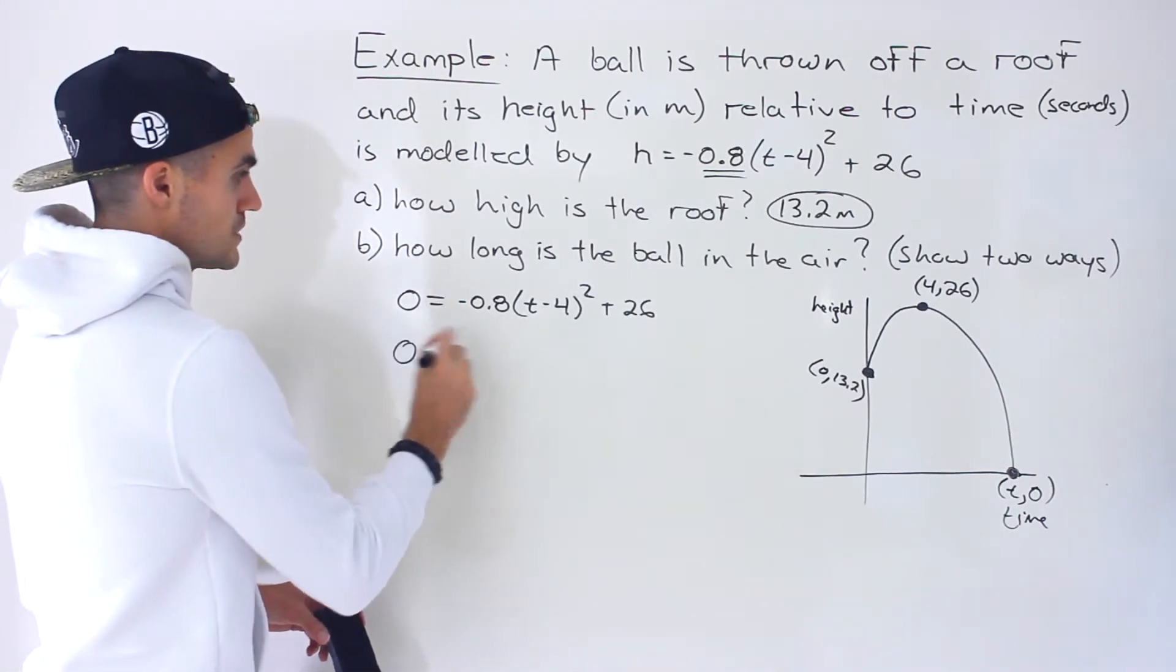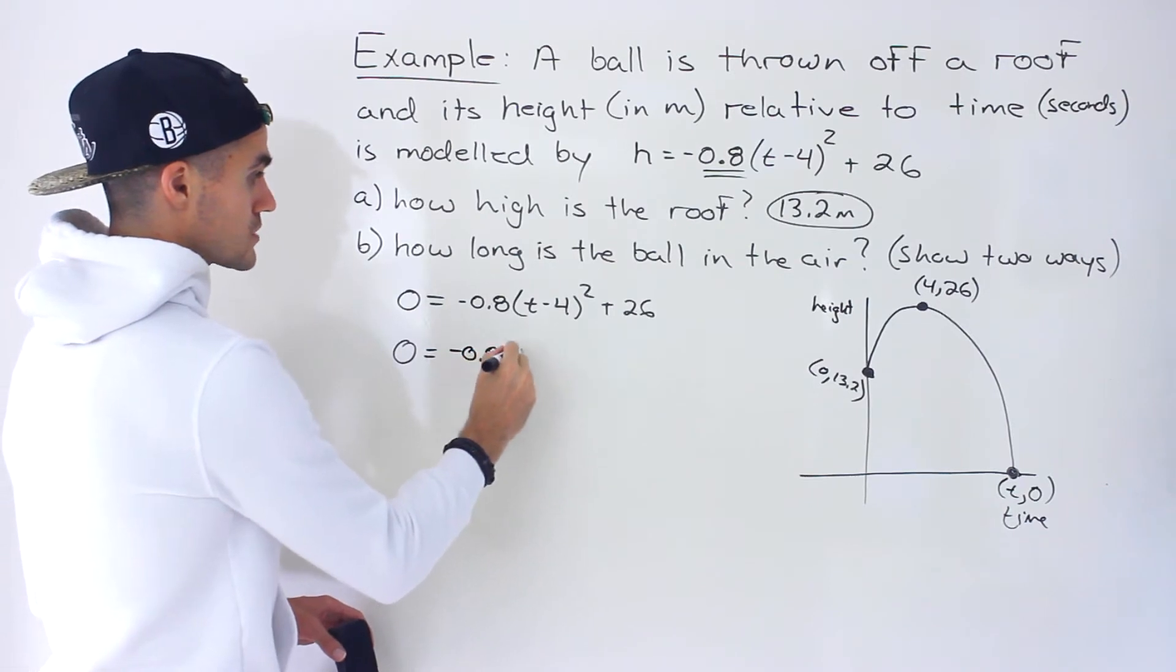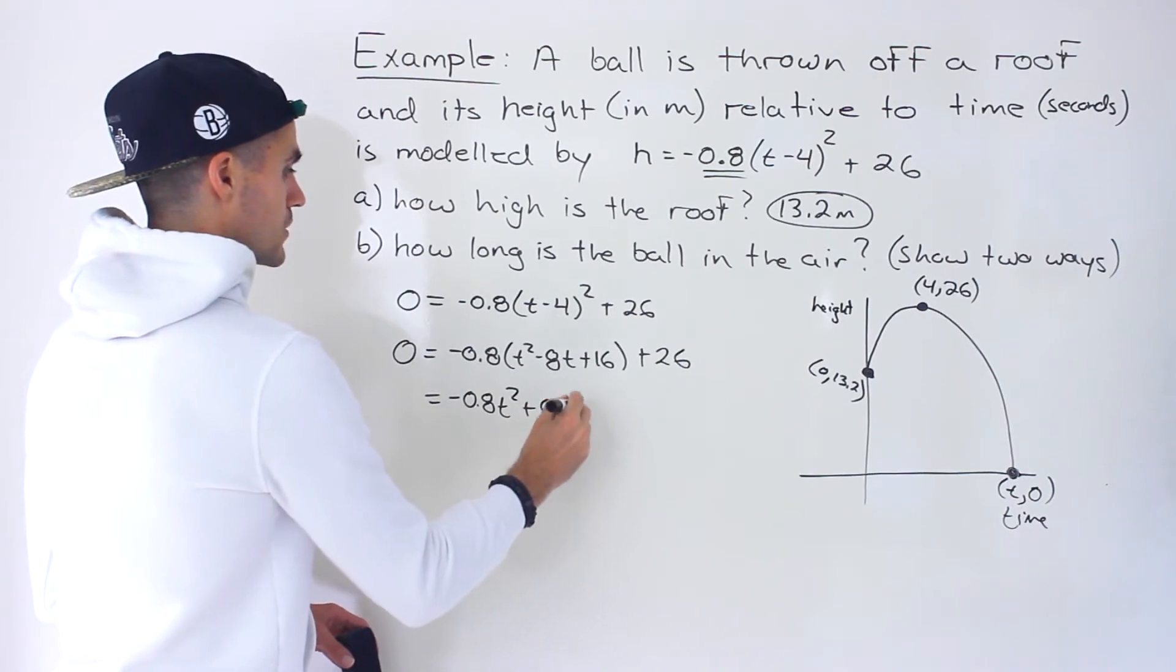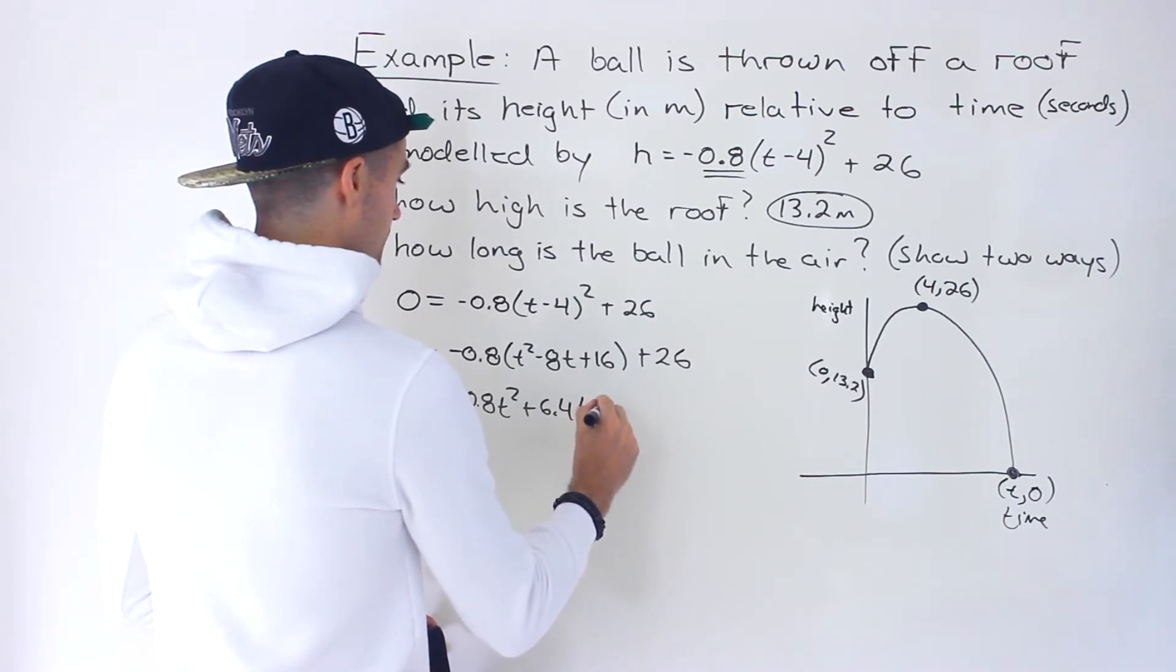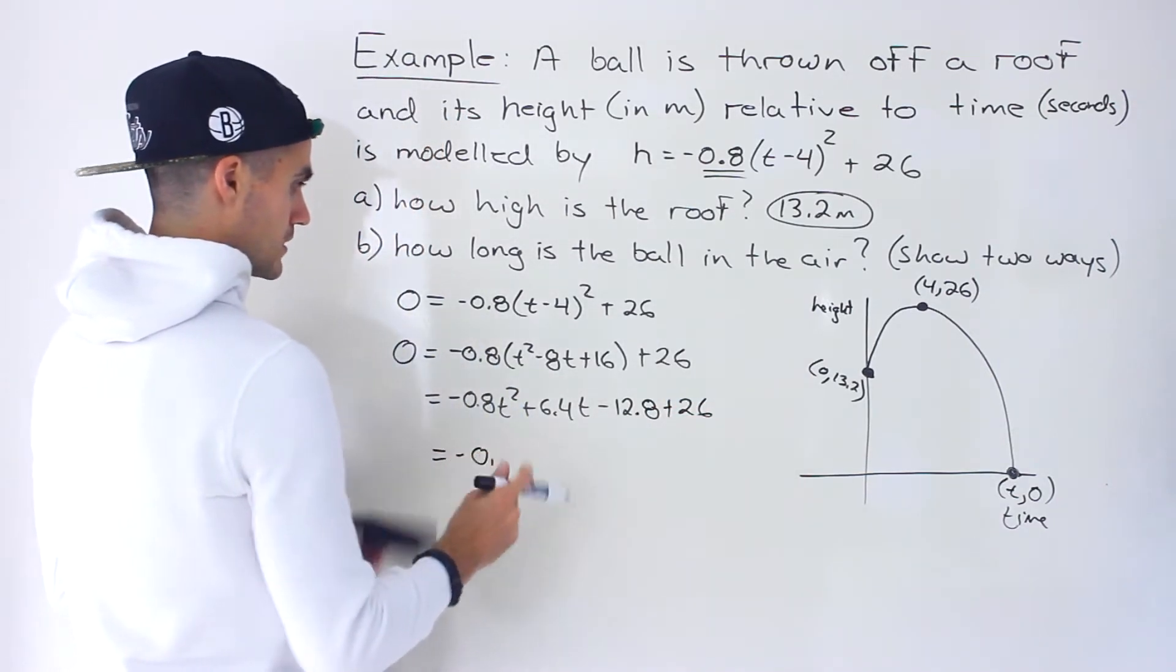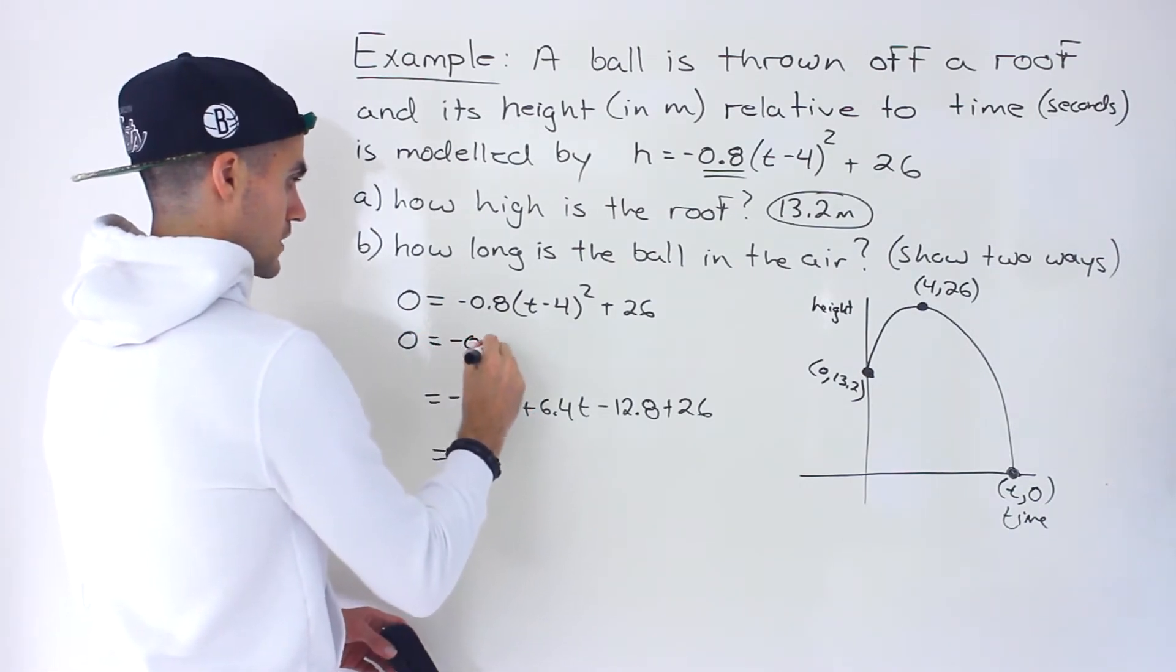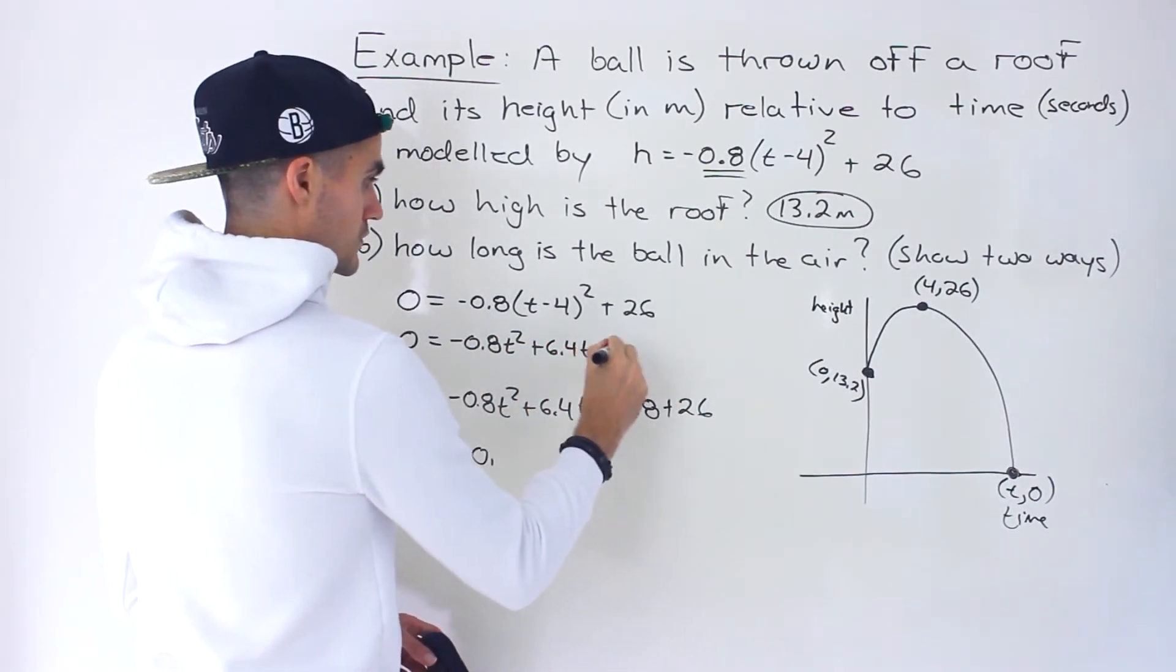What we would do is we have to take this, in order to put into that quadratic formula, we got to get the standard form. So we have to expand everything. So we'd have t² minus 8t plus 16 plus 26. So we'd end up with negative 0.8t² plus 6.4t. Negative 0.8 times 16 would give us negative 12.8 plus 26. I'm going to write that up here just to give us some room for using that quadratic formula. So we'll have negative 0.8t² plus 6.4t. Then negative 12.8 plus 26 would give us positive 13.2.